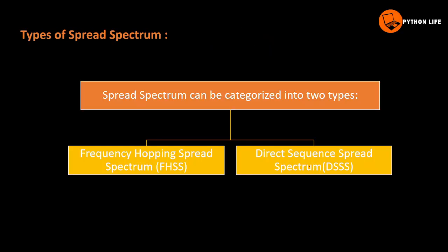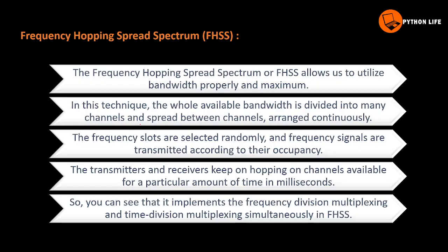The first type is Frequency Hopping Spread Spectrum, or FHSS. FHSS allows us to utilize bandwidth properly at a maximum level. In this technique, the whole available bandwidth is divided into many channels, and the signal is spread between channels arranged continuously.